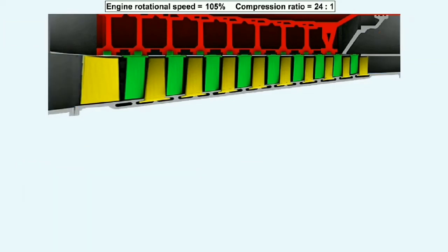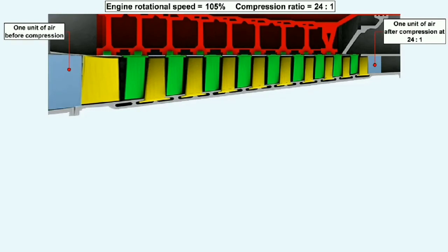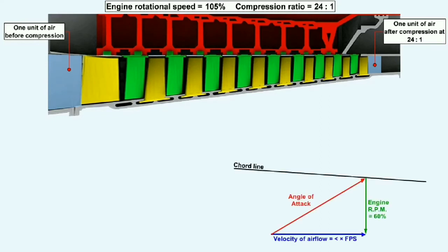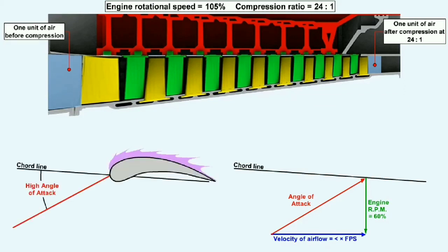If the engine is allowed to rotate faster than its design maximum, the compression ratio will increase accordingly. At 105% of its optimum figure, the compression ratio increases to 24 to 1. The decreased volume of air will move slower through the compressor. The changed relationship between the decreased airflow axial velocity and the increased RPM generates a high angle of attack over the rotor blade.